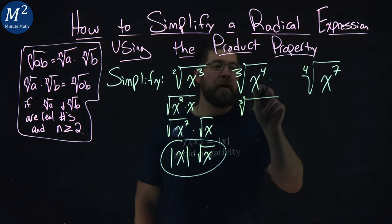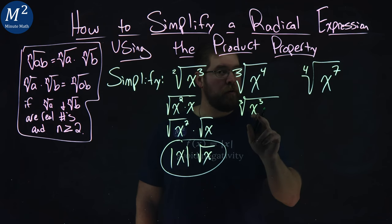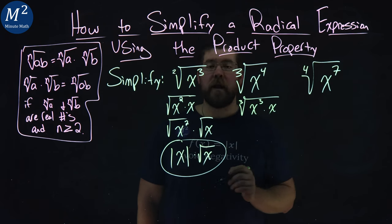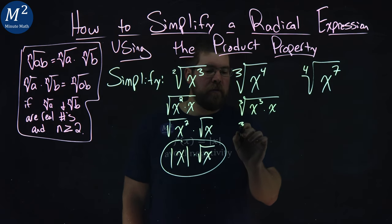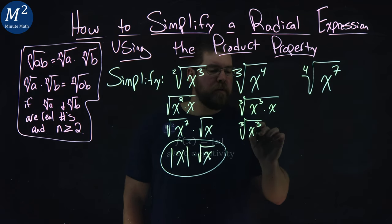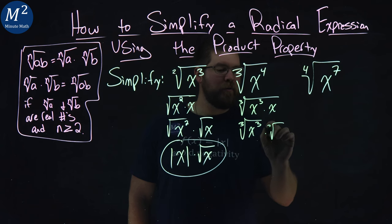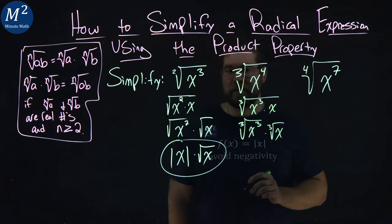The third root of x to the fourth power is x to the third power, a cube, times an x. From here, we can separate this out. The third root of x to the cube times third root of x.